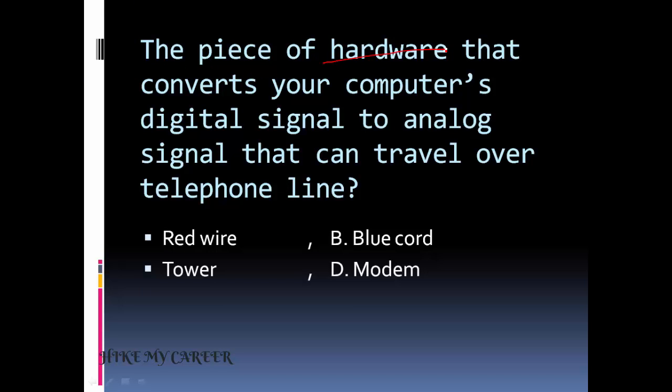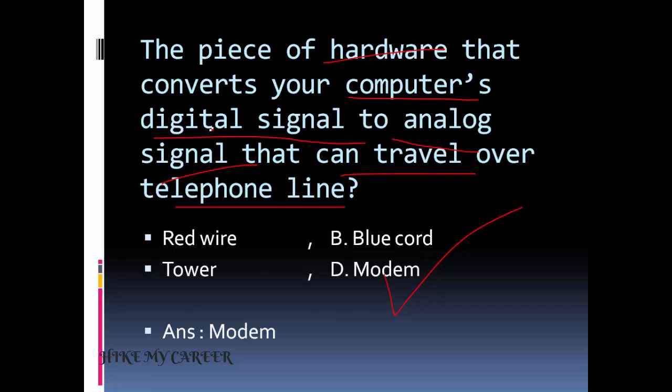Next question. The piece of hardware that converts your computer's digital signal to analog signal that can travel over telephone line. Option 1: Red wire. Option 2: Blue cord. Option 3: Tower. Option D: Modem. Answer is Modem. Modem converts the digital signal to the analog signal.